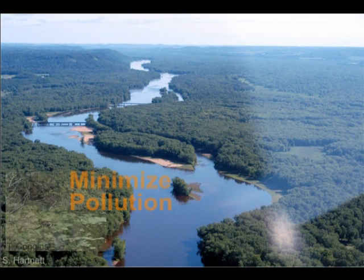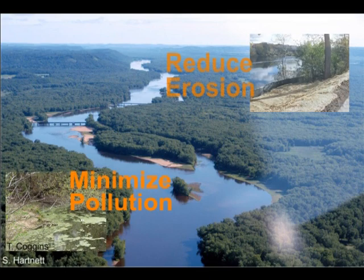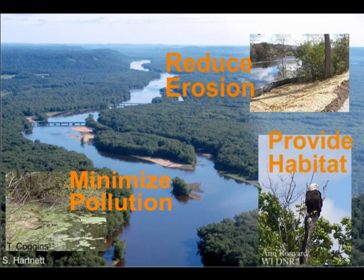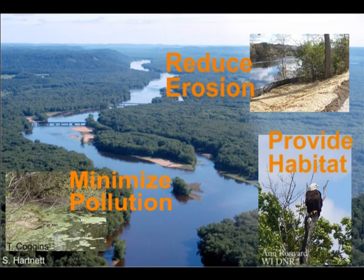Riparian buffers play a vital role in minimizing pollution, reducing erosion, and providing habitat for wildlife along the river. It is important that we don't destroy existing riparian buffers, but focus on establishing and maintaining them so that they can continue to provide these services for wildlife and water quality along the Chippewa River.